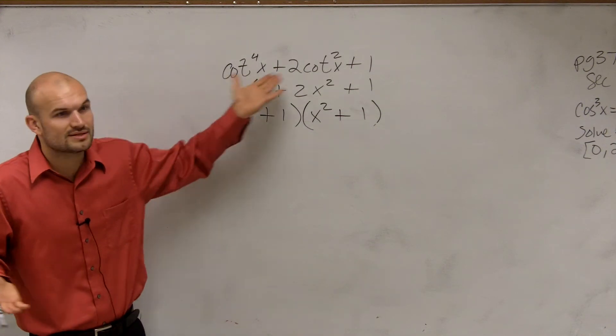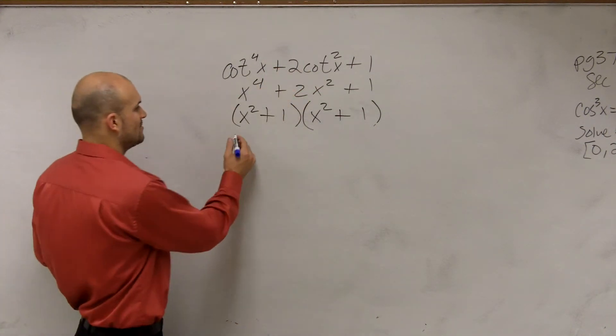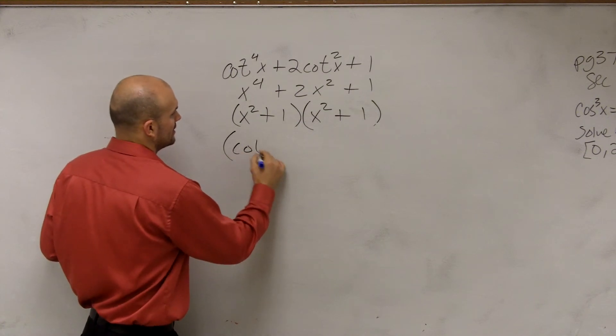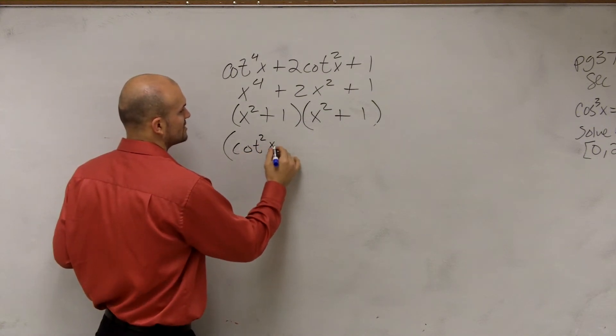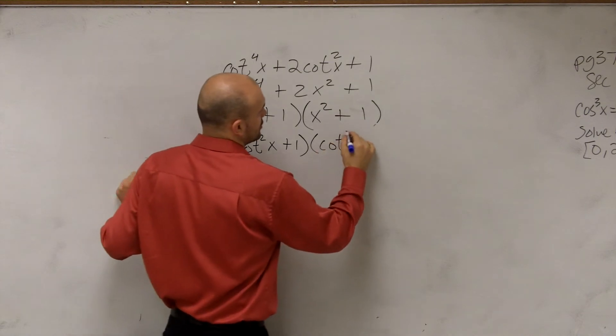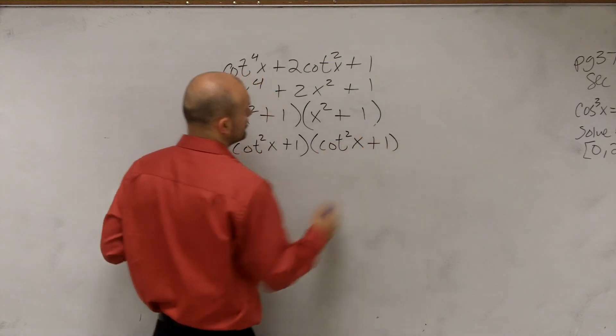And really, all I'm doing is just inserting the cotangent in there. So really, my factored form of this problem is just cotangent squared of x plus 1 times cotangent squared of x plus 1.